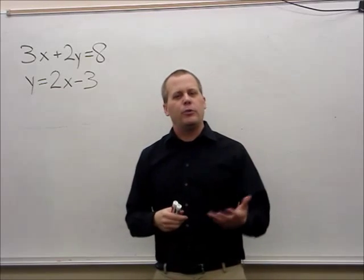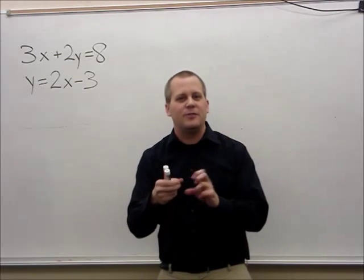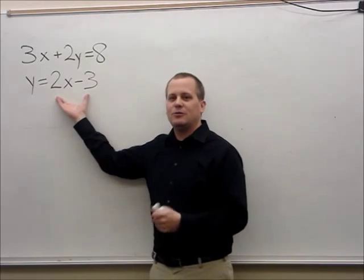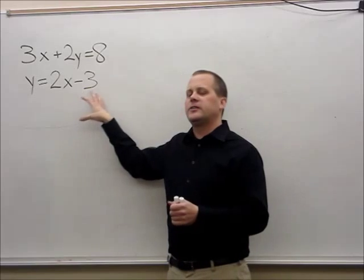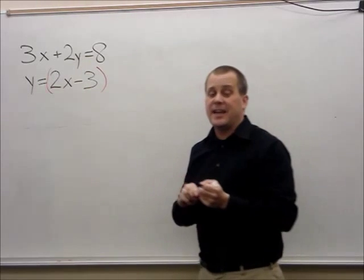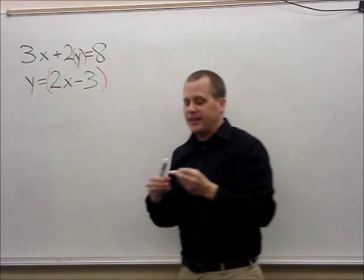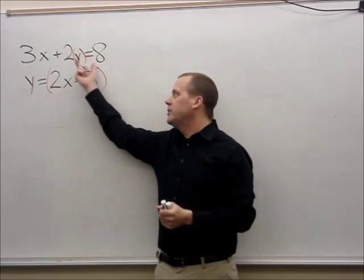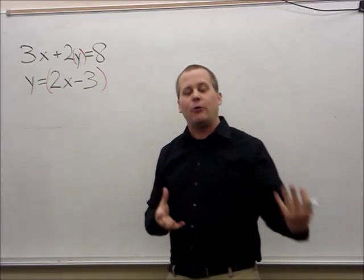As I mentioned in the last clip, the substitution method is like being at your favorite restaurant where they replace barbecue sauce with ranch dressing — they take something away and replace it with something else. Here's what we'll do: I'm going to put parentheses around 2x minus 3 because that's what y equals, and I'm going to put parentheses around the y in the first equation. Then I'll have them switch places.